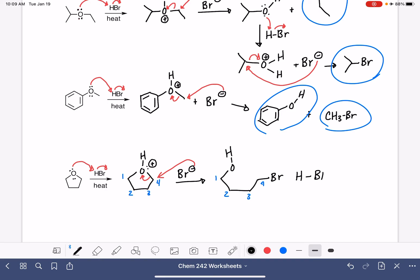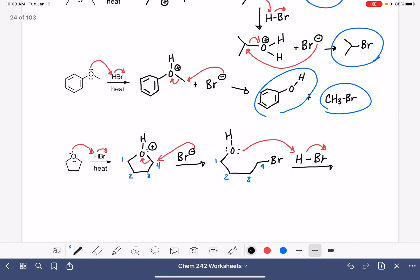We still have a lot of extra HBr. And remember, anytime you have an oxygen in the presence of an acid, the first thing you should do is protonate the oxygen. So protonate that oxygen one more time. And that's going to give us this guy.